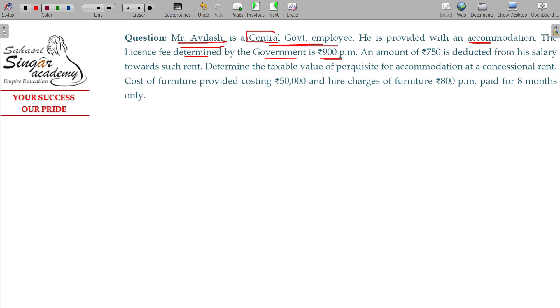For a central government employee, the license fee represents the rent-free accommodation value. The taxable value of perquisites for accommodation at concessional rent includes: cost of furniture provided being 50,000, with 10% depreciation on assets. At the same time, hire charges are 800 per month, but it is provided only for 8 months.